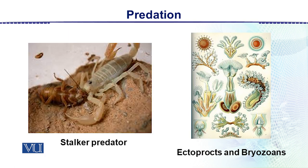Then there are grazing carnivores that move about the substrate picking up small organisms. Their diet usually consists largely of sessile and slow-moving animals such as sponges, ectoprocts, tunicates, snail worms, and small crustaceans. These are the different types of animals involved in predation — including stalker predators, which are arthropods, and ectoprocts and bryozoans, which are marine water animals. This covers the topic of predation.